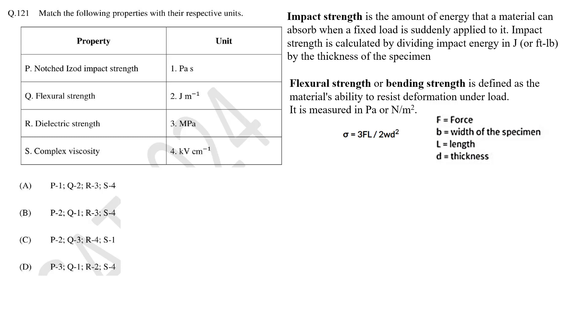So unit 2 matches with the notched impact strength. Flexural strength or bending strength is defined as material's ability to resist deformation under load. Flexural strength can be measured by 3-point or 4-point bending test. During the test a rectangular sample is placed on two supporting pins at a fixed distance and then force is applied. It is calculated by given formula. This gives flexural strength in N per meter square which is also called as Pascal. So unit 3 matches with flexural strength.